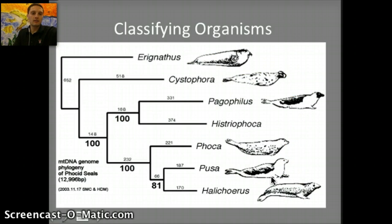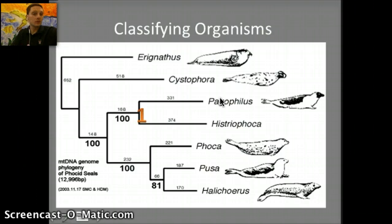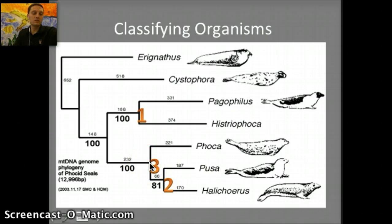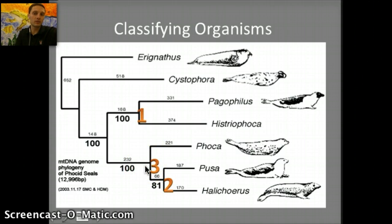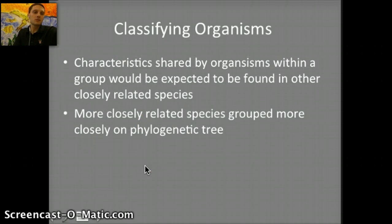When looking at phylogenetic trees and classifying organisms, we can look at nodes — we've previously talked about nodes in our development of a cladogram. For example, node number one here shows these two species being very closely related, with one node representing a common ancestor for both. For number two, these two species share a common ancestor. And number three represents an interesting aspect: three species closely related to one another, with that node representing the common ancestor for all three. More closely related species are grouped more closely together on a phylogenetic tree.